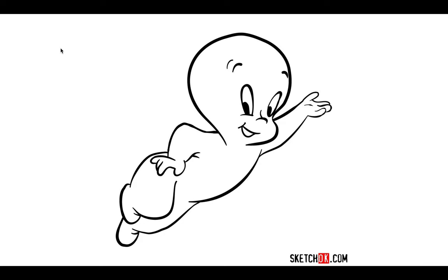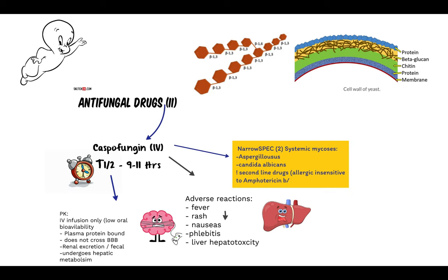That brings us to Caspofungin, the second antifungal drug used to treat systemic mycosis. The mechanism of action of Caspofungin is it decreases synthesis of the cell wall by inhibiting the beta-glucan component of the fungal cell wall — the yellow part seen in this picture. So whereas Amphotericin B works by binding to ergosterol, Caspofungin works by inhibiting beta-glucan, decreasing cell wall synthesis, causing the fungal cell to fall apart.